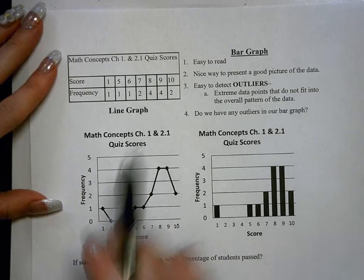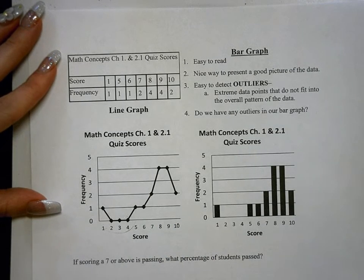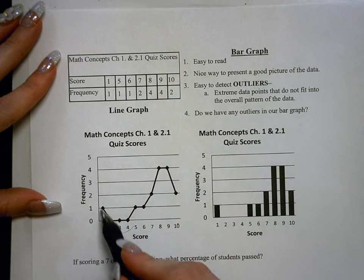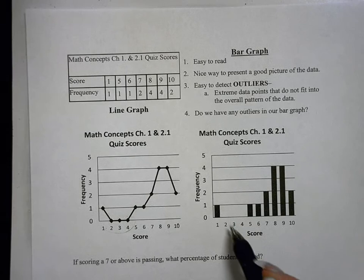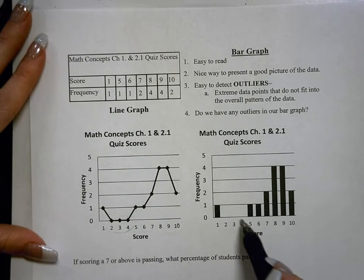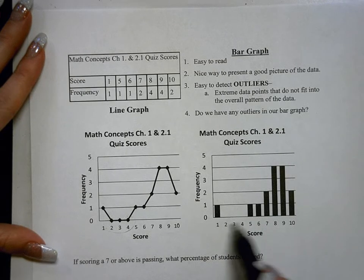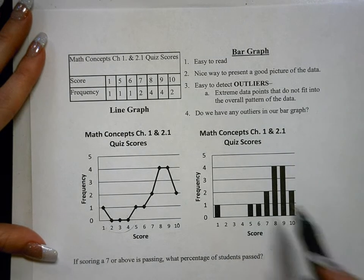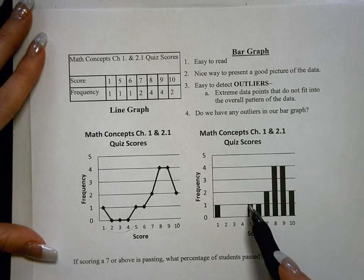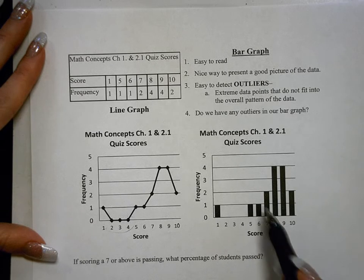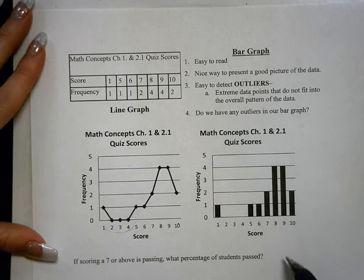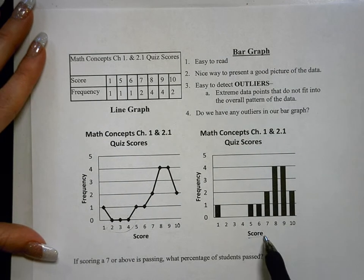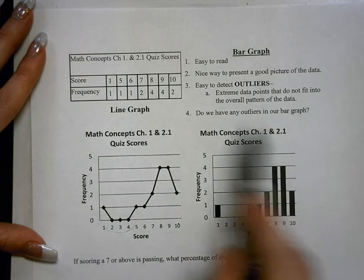From a line graph, you can just easily make a bar graph, which is basically just the same information but instead of points and lines connecting, there are just columns here. And they all have a frequency of 0, which means they're not shown. And then here are the corresponding scores. 5 has a frequency of 1. 6 has a frequency of 1. 7 has a frequency of 2. And so on. And so it's important to label the axes. This is the score. This is the frequency. There's the title.